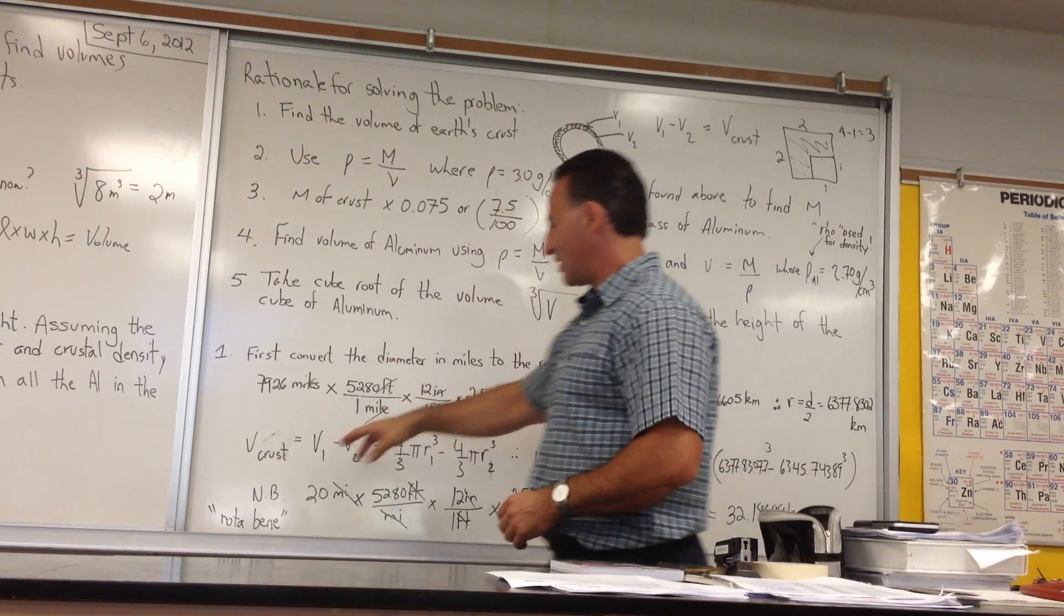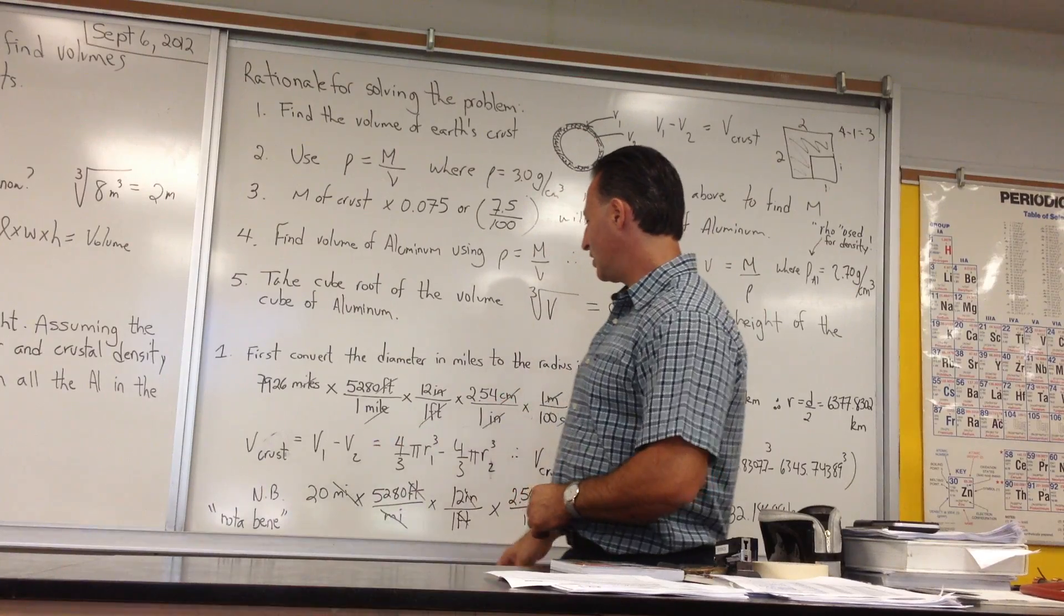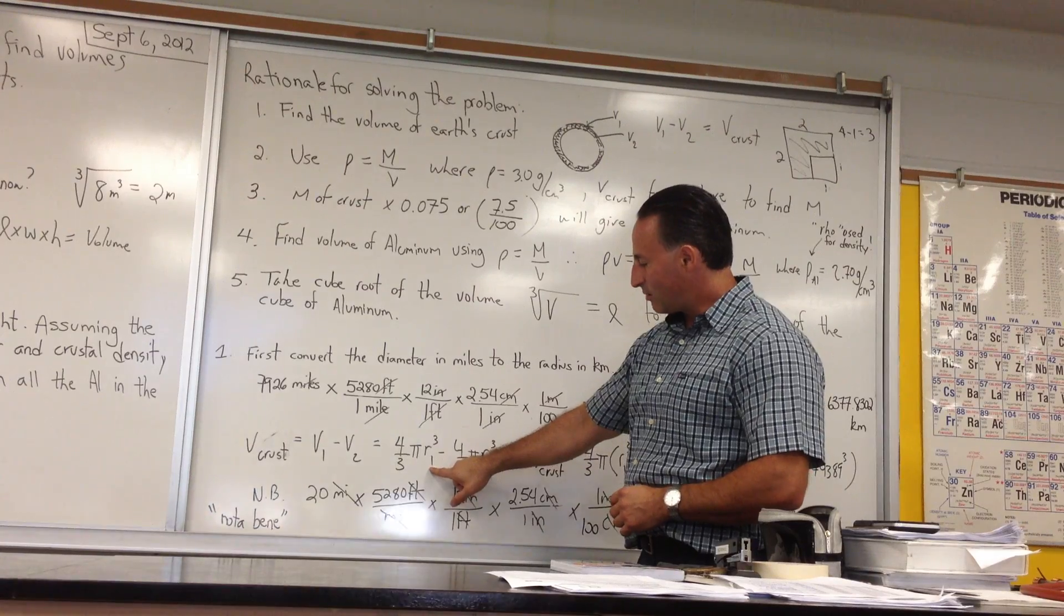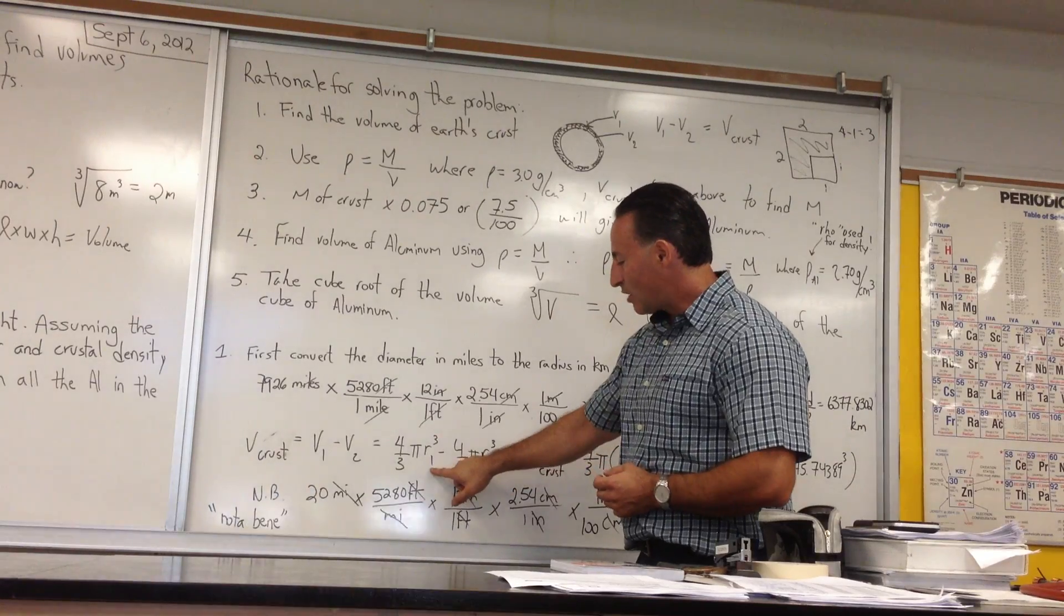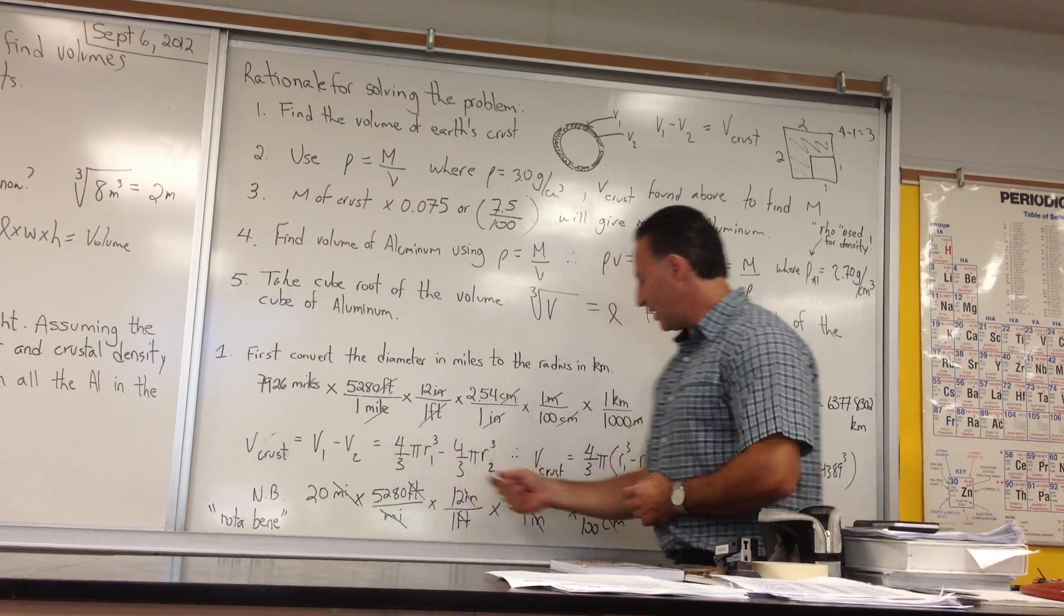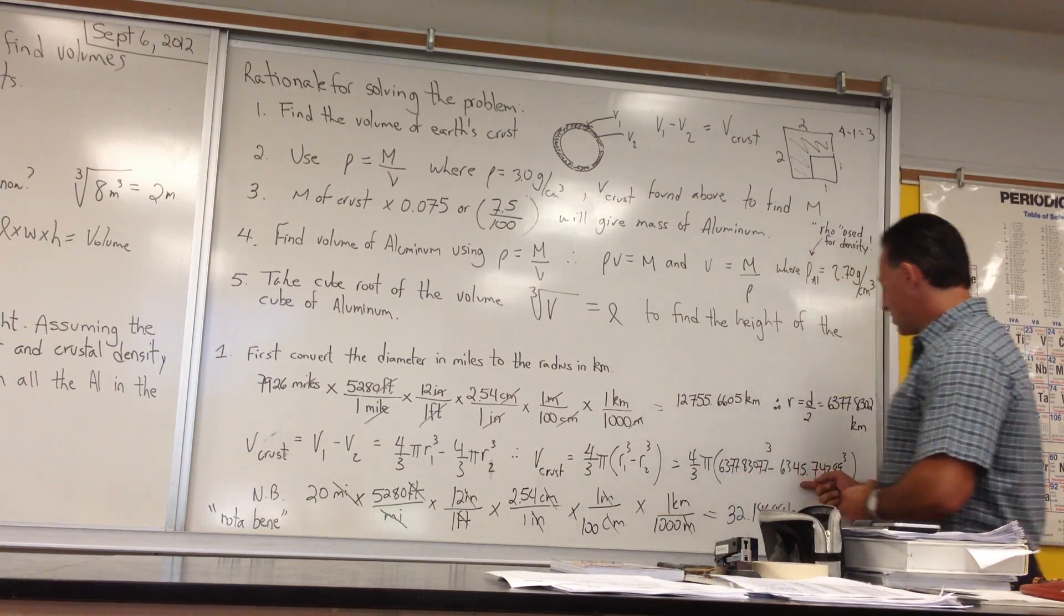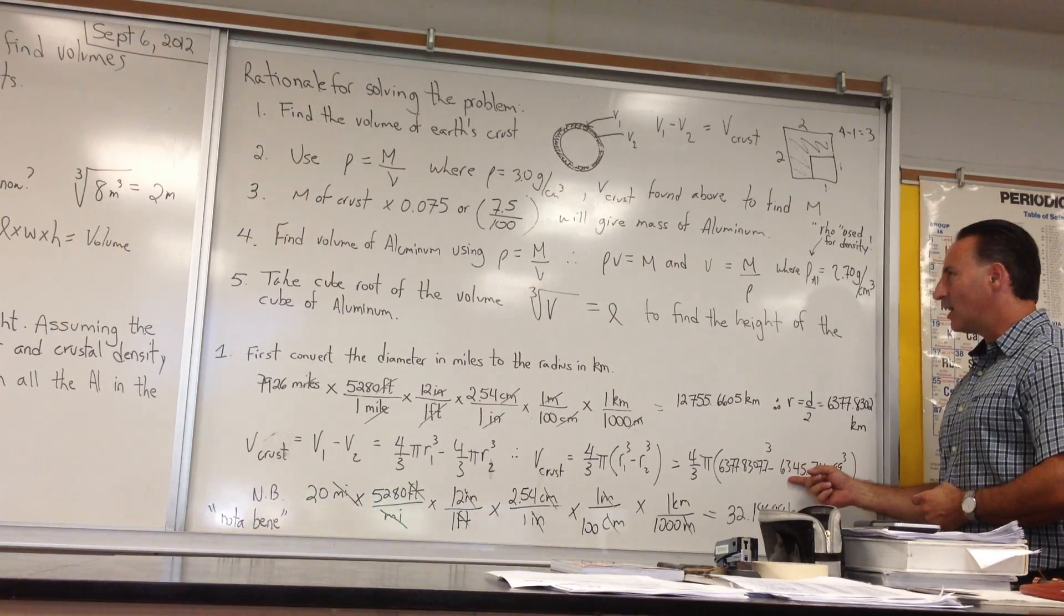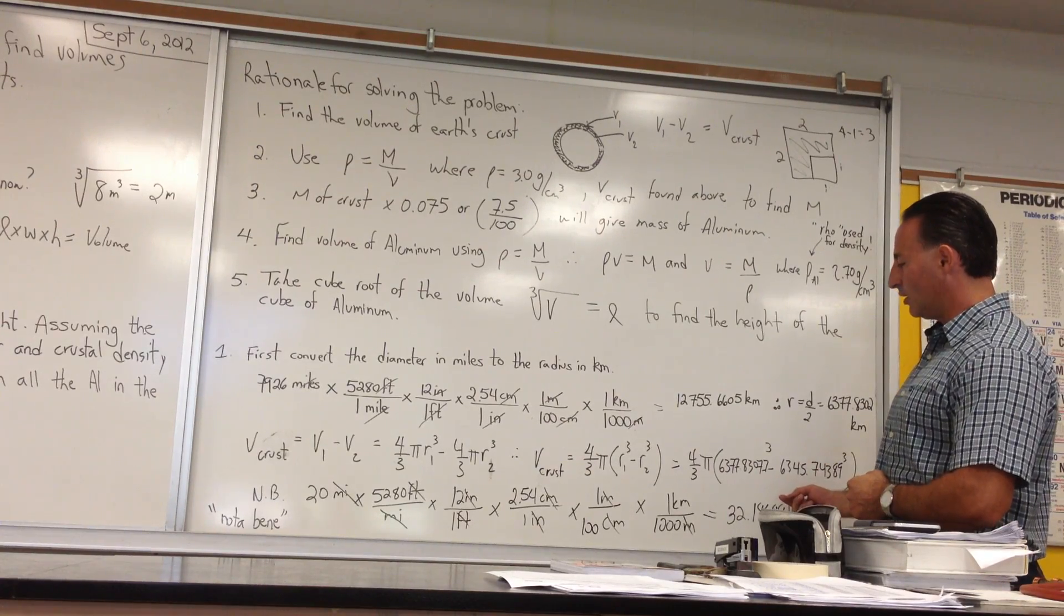We know that the volume of the crust is going to be given by V1 minus V2, outer shell minus inner shell. The volume of a sphere is 4 over 3 pi R cubed. I've used subscripted variables here, so I have R1 and R2. I'm using the same variable but it's not the same number. Then I factored out the 4 over 3 pi, put it in brackets so I can just work on these two numbers. I put the two numbers in. This is the radius of the inner crust, and it's 32 kilometers smaller.